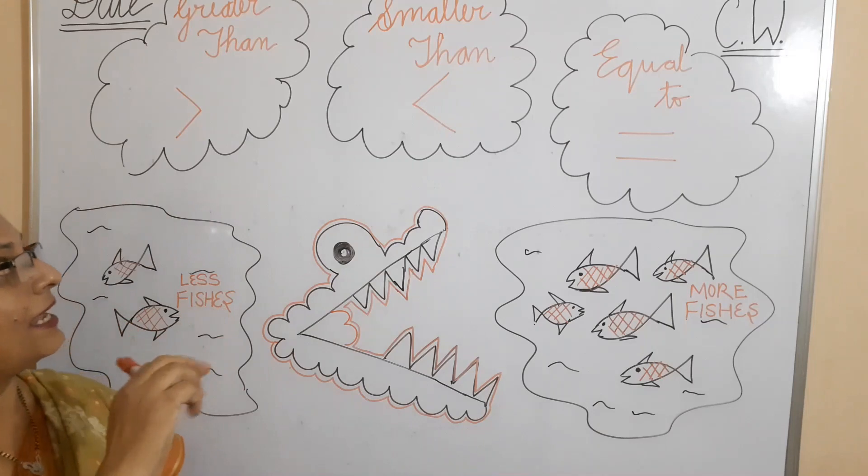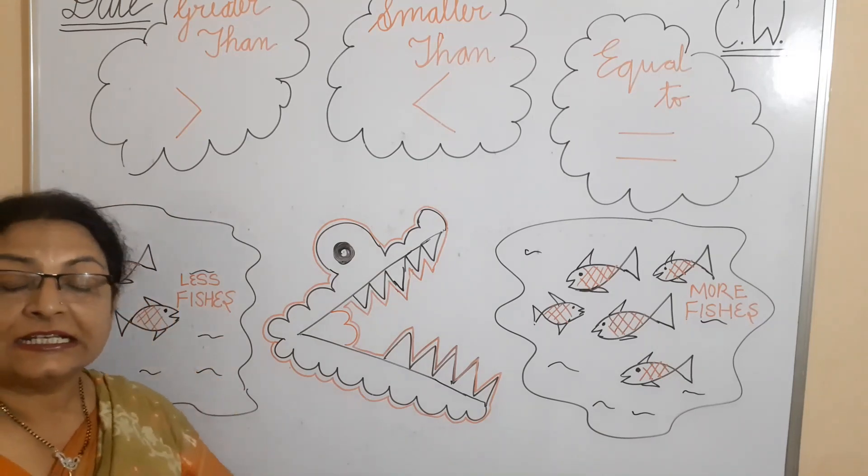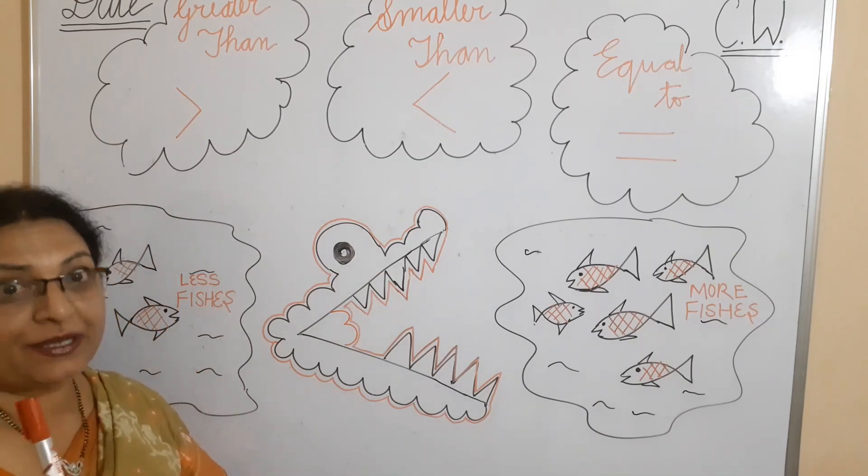Means bigger number like 13, 14, 15 don't like to eat smaller numbers. Did you understand this concept?